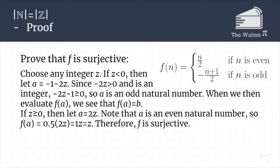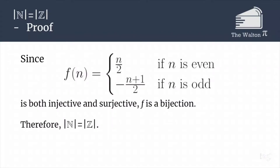Apologies for that typo — that b should be a z. If z is greater than or equal to zero, then we choose a = 2z. Because a is an even natural number, f(a) = (1/2)(2z) = z. Therefore f is surjective. Since our function is both injective and surjective, f is a bijection, which tells us that the cardinality of the natural numbers is equal to the cardinality of the integers.